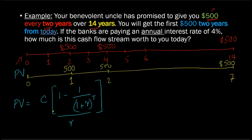Be very, very careful though. This is just one time period, but it is not one year — and that is important because your interest rate is given as an annual interest rate. As you are waiting for the first $500, which is two years away on the original timeline, you lose out on earning 4% in the first year, and then in the second year you lose not only another 4% but also the 4% you could have earned on the previous year's 4%.